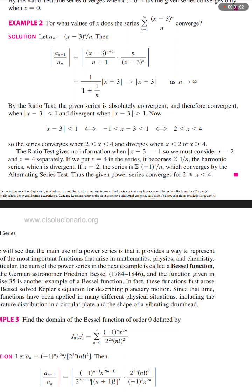This approaches |x-3| as n approaches infinity. By the ratio test, the given series is absolutely convergent and therefore convergent when |x-3| < 1 and divergent when |x-3| > 1.